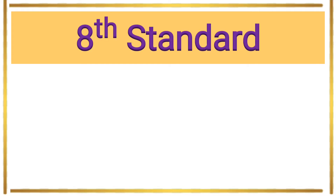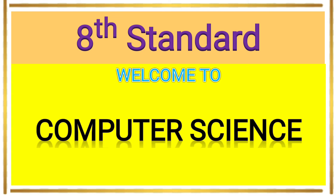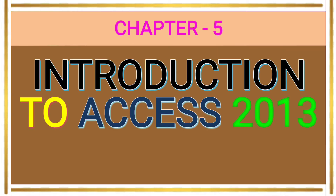Dear students, welcome to Computer Science class. Today we are going to discuss Chapter 5: Introduction to Access 2013. We will see the topic of moving a field. For example, for a particular order of fields such as admission number, employee name, employee contact number, email address, and salary.